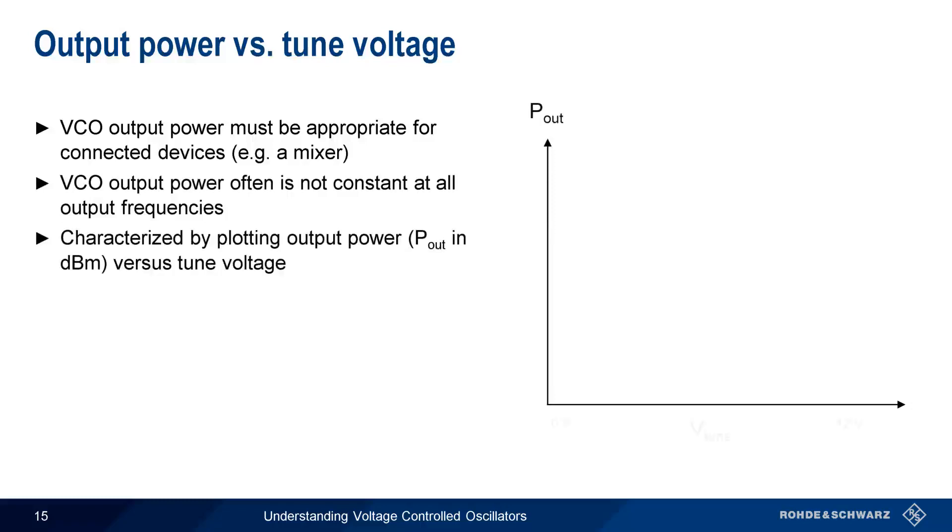This situation is somewhat complicated by the fact that VCO output power is often different at different output frequencies. We can characterize this by plotting output power versus the tuning voltage. When making power measurements, the load impedance should be specified, since it affects the amount of delivered power, and in most cases the standard RF impedance of 50 ohms is used.